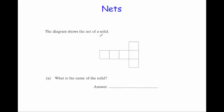The diagram shows the net of a solid — name the solid. Well, as you can see, it's going to be a cube. It's rolled around, so you'd have your front and back and then you would have your four sides. So that is a cube.